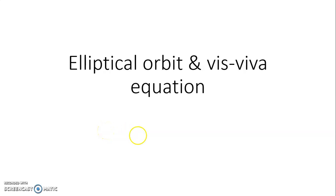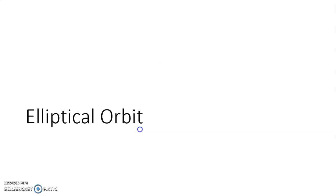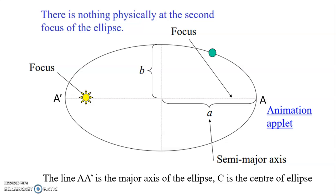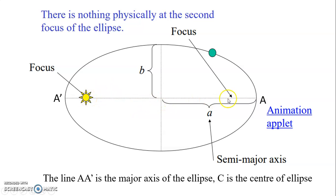Assalamualaikum dan salam sejahtera. Today I would like to share about elliptical orbit and the Vis-Viva equation. In an elliptical orbit we have two axes: the major axis represented by A, and the semi-minor axis represented by B. The line between A' and A we call the major axis, and the line between the two minor endpoints we call the minor axis. The focus is located either to the left or to the right, and the center is here represented by C.